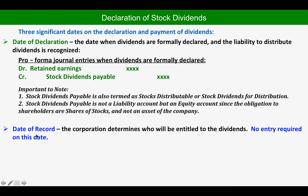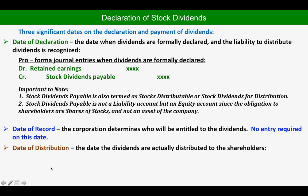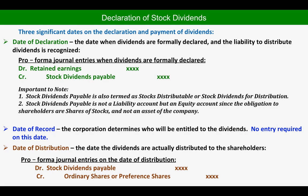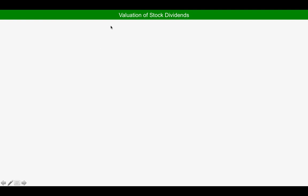On the date of record, the corporation determines who will be entitled to the dividends; there is no entry required on this date. On the date of distribution — when the dividends are actually distributed to shareholders — we debit Stock Dividends Payable and credit Ordinary Shares or Preference Shares, whichever shares are issued as the dividend. In certain valuations, we also credit Share Premium.